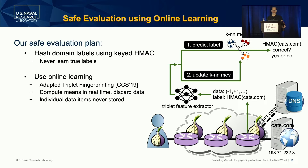We adapted the triplet fingerprinting attack from CCS 2019 using online learning. This attack is split into two parts. There's a feature extractor which takes the raw data sequences and turns them into a feature vector. We take that vector and do two things: first, we predict the label for that vector using the KNN model from the triplet fingerprinting work. Second, we take the feature vector and the label together and update our KNN embedded vectors so that we can better predict future visits to that domain.